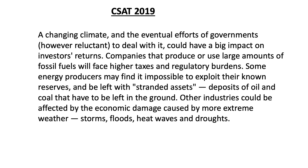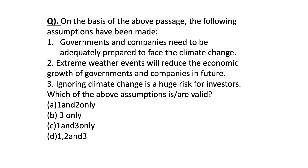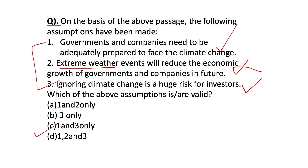Another passage. On the basis of the above passage, the following assumptions have been made: (1) Governments and companies need to be adequately prepared to face climate change — absolutely correct, no problem with this statement; (2) Extreme weather events will reduce the economic growth of governments and companies in the future — this is stated with too much certainty as a negative outcome, so statement 2 is ruled out; (3) Ignoring climate change is a huge risk for investors — absolutely right. Statements 1 and 3 are correct, so option C is the correct answer.